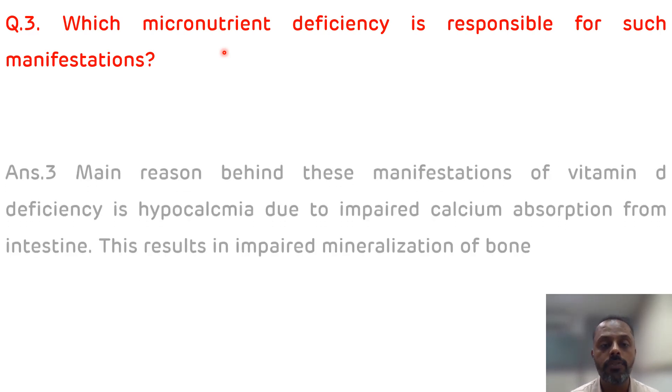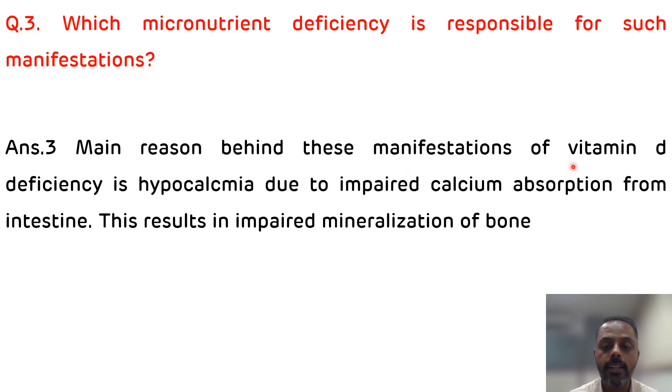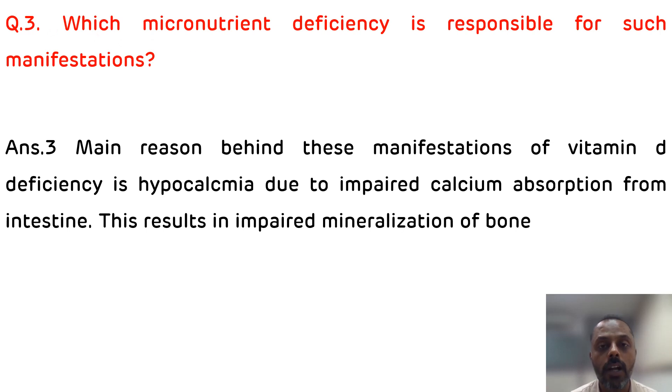The third question is: which micronutrient deficiency is responsible for such manifestations? In rickets, there is hypocalcemia — a reduction in calcium level — which occurs due to reduced intestinal absorption of calcium, so it occurs due to calcium deficiency. The main reason behind this manifestation of vitamin D deficiency is hypocalcemia due to impaired calcium absorption from the intestine, which also results in impaired mineralization of bone.